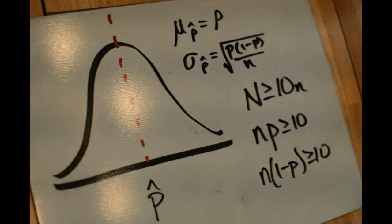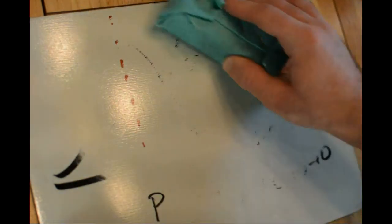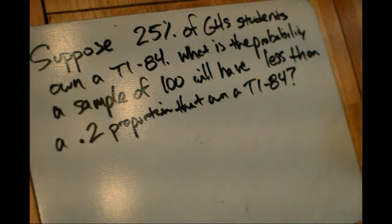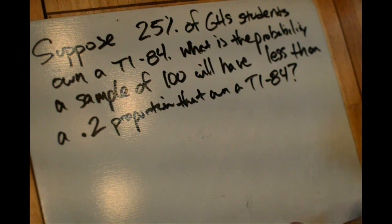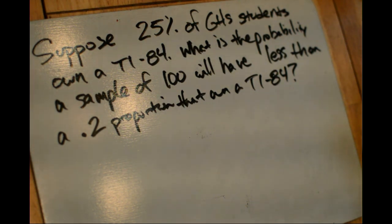Let's take a look at an example involving a sampling distribution of p-hat. Normally we won't actually know the true parameter, but let's suppose that we know 25% of GHS students own a TI-84. The question is: what is the probability that a sample of 100 will have less than a 0.2 proportion that own a TI-84?